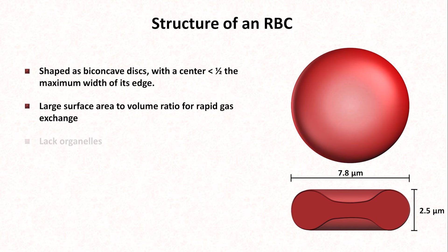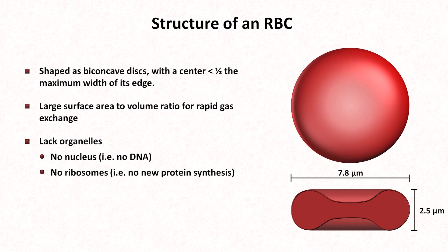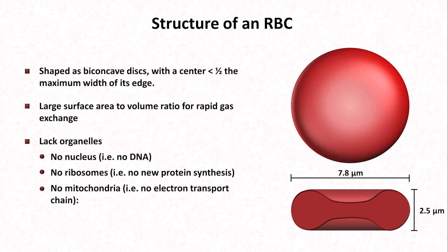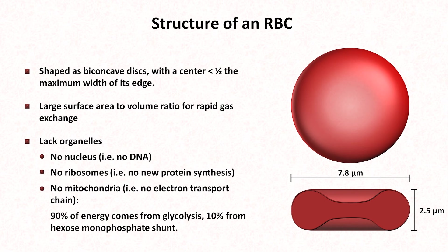Mature red blood cells lack organelles — so no nucleus, meaning it contains no DNA. It has no ribosomes, so there's no new protein synthesis. The proteins an RBC has at the time it fully matures is all it will get over its remaining lifespan. And there are no mitochondria, meaning no electron transport chain or oxidative phosphorylation. So where does the energy come from? About 90% comes from glycolysis, and about 10% comes from the hexose monophosphate shunt.